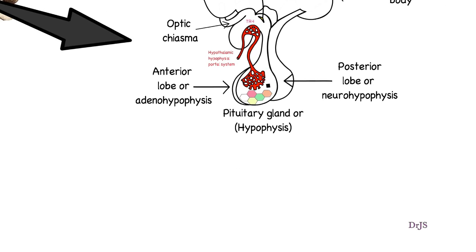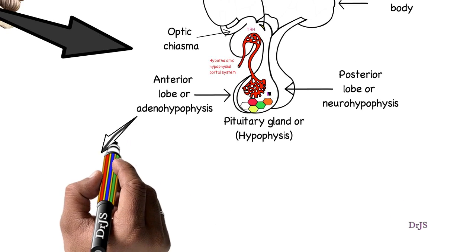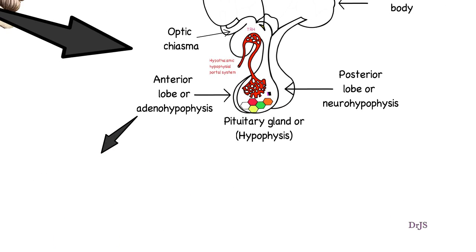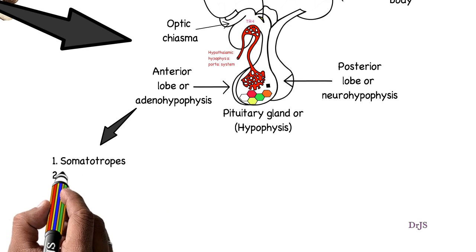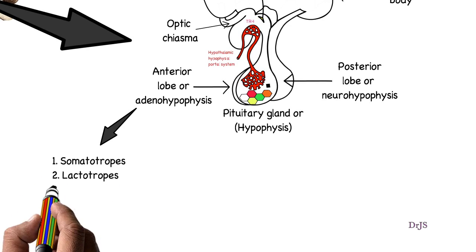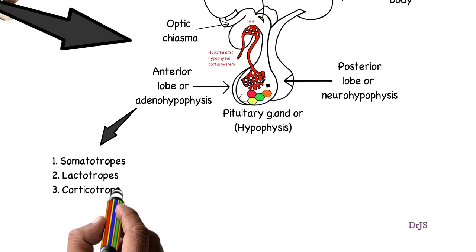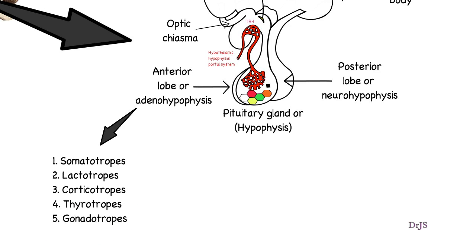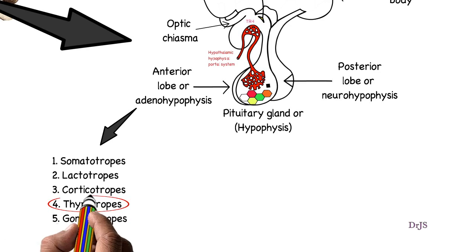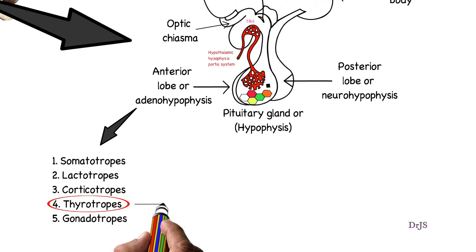There are many secretory cells in the anterior lobe, such as somatotrophs, lactotrophs, corticotrophs, thyrotrophs, and gonadotrophs. Here I will focus only on the thyrotrophs, which secrete TSH or thyroid stimulating hormone.